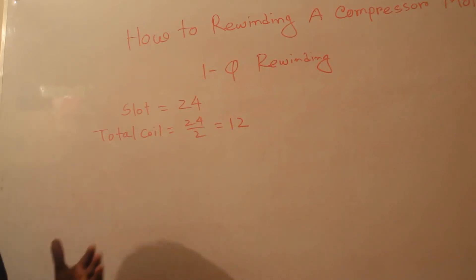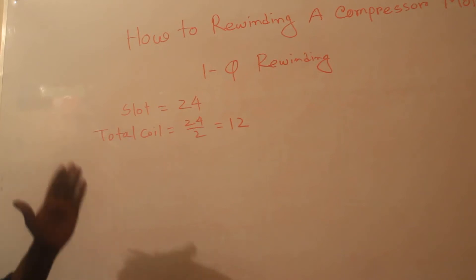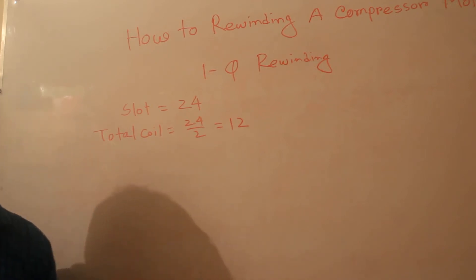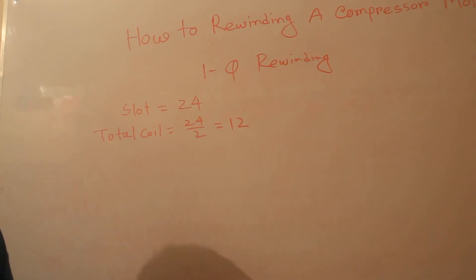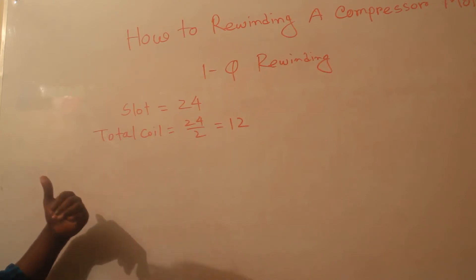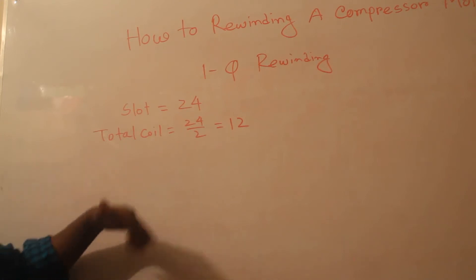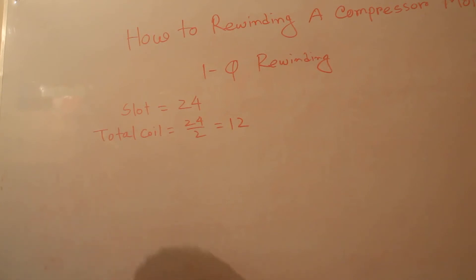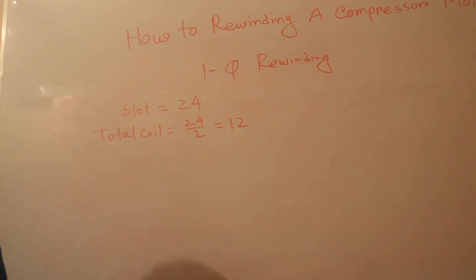A single phase motor is separated into 2 coils: one is the running coil and the other is the starting coil. Actually, in a single phase motor, one is the main coil and the other is the auxiliary coil. The main coil always runs the motor, and the starting coil is only used for starting.